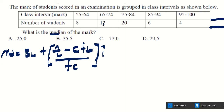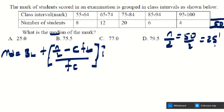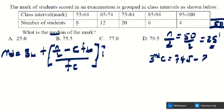Total frequency n = 20 + 10 + 20 + ... = 50. So n/2 = 25. Cumulative frequencies: 8, then 8+12 = 20, then 20+20 = 40 — so the 25th value falls in the third class. The class boundary for the third class is 74.5 to 84.5 (lower boundary = 74.5), and class width h = 10.